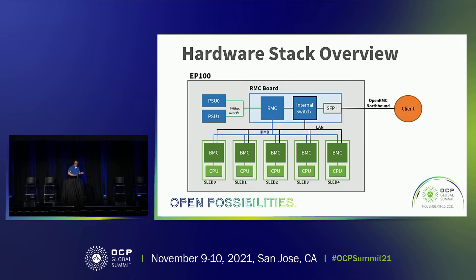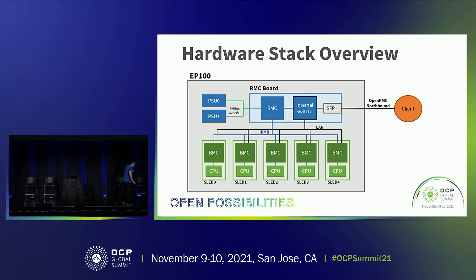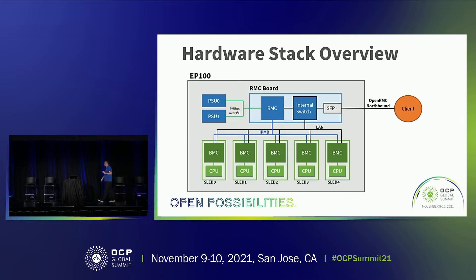Here is the hardware system stack overview. We have the EP100 with PSU, RMC, and internal switch residing on the RMC card. Going through the LAN and IPMB, it talks to the BMC at each of the sleds. There are five BMC chips going through the IPMB and LAN to talk to the RMC board. The RMC board then goes uplink northbound to your control center. So instead of having five individual BMC connections, it is consolidated into one RMC connection.